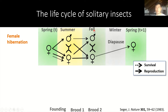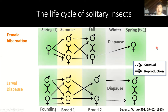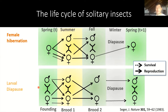These two broods are composed of males and females. The females in this second brood, after mating, go into diapause over winter and start a new life cycle again in the spring of the following year. In contrast, we have a different life cycle from a solitary insect where the main difference is that the foundresses do not start the season mated, but rather both males and females overwinter in the larval stage. I'm not going to go into the details of this second life cycle, but I'd like to go back to the female hibernation life cycle.